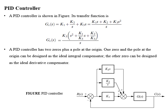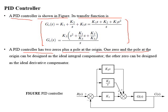A PID controller is shown in the figure and its transfer function is given by GC of S. A PID controller has two zeros plus a pole at the origin. One zero and the pole at the origin can be designed as the ideal integral compensator. The other zero can be designed as an ideal derivative compensator. In a PID controller, a sum of proportional error, integral error and derivative of error are forwarded to the plant.